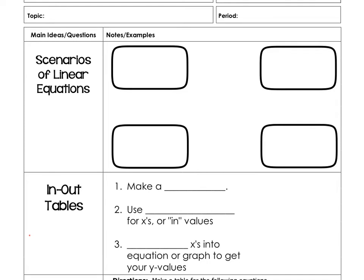It's important to know that when we have linear equations, there are four different ways we can represent them. We can represent them with an equation — first and foremost, the equation y equals mx plus b. In Algebra 1, this is the most common type of linear equation we use. There's also standard form and point-slope form, though those are not talked about as much as slope-intercept form. Another form we talk about are graphs — a coordinate plane with our line drawn on it, with an x-axis, a y-axis, and a line spanning across.